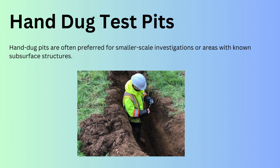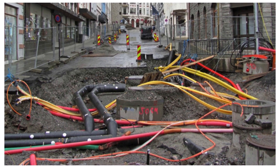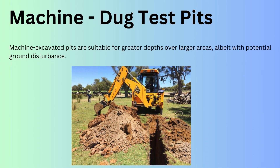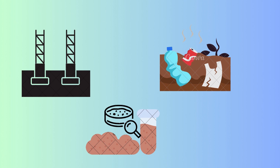Hand-dug pits are often preferred for smaller scale investigations or areas with known subsurface structures. For instance, if there are known subsurface structures like utilities, water, or electric cables, the test pits would be dug by hand, while machine-excavated pits are suitable for greater depths over larger areas with potential ground disturbances. Despite their depth limitations, trial pits offer a rapid and relatively inexpensive means to understand the soil profile and assess ground conditions, aiding in foundational design, contamination analysis, and other sampling methods.